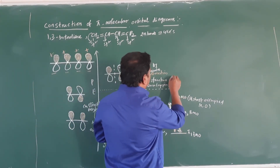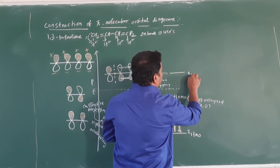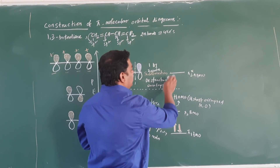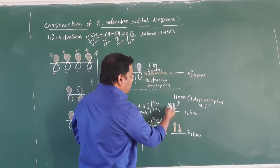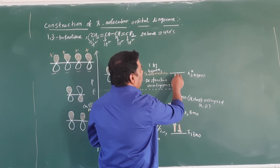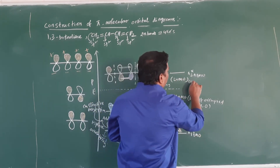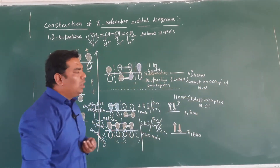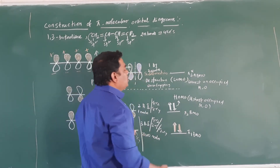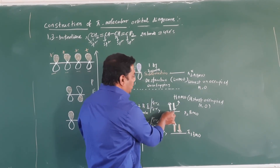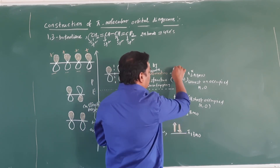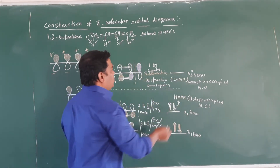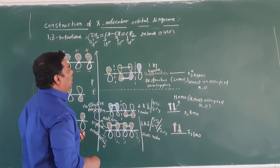This is another energy level — pi3*, an anti-bonding molecular orbital. There are no electrons in this level; all four electrons are filled in the lower energy levels. This orbital is called the LUMO — Lowest Unoccupied Molecular Orbital. If some energy is applied, electron transition from the HOMO level to the LUMO level is possible.